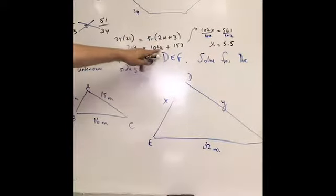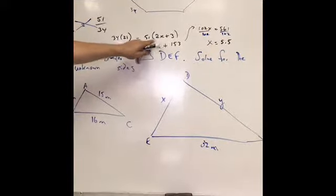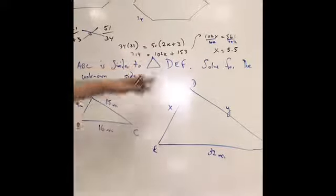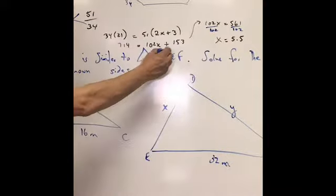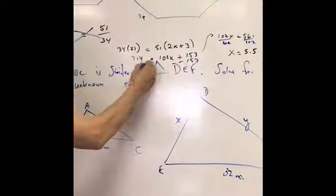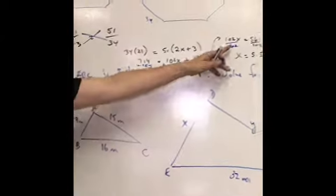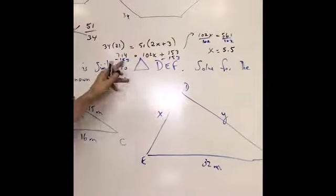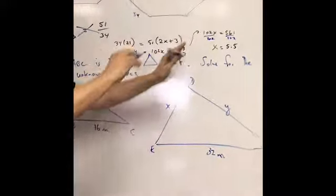51 times 2 is going to be 102X. 51 times 3 is 153. We then subtract the 153 here and here, and we get 102X equals 561. This is 561. We just commuted them.